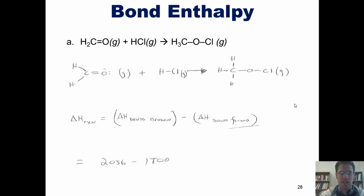2,056 minus 1,800 gives me an overall delta H for this reaction of positive 256 kilojoules per mole, which means that this reaction is endothermic.